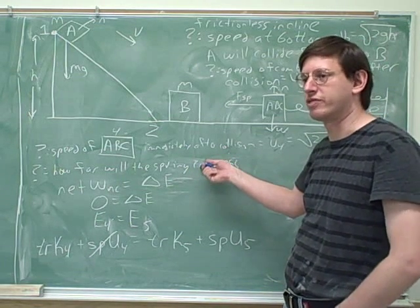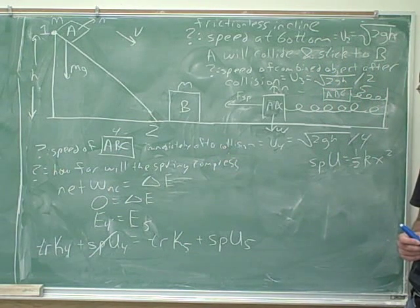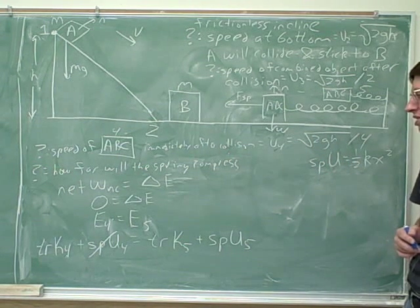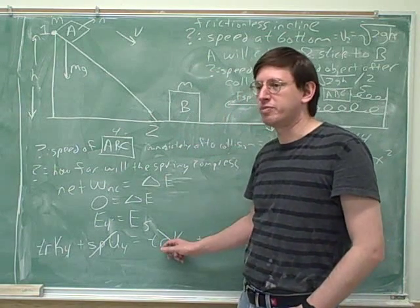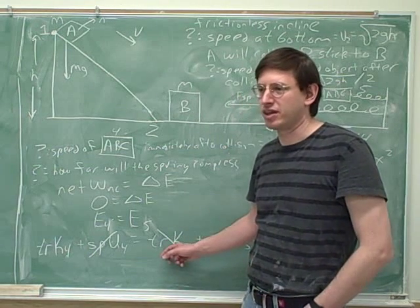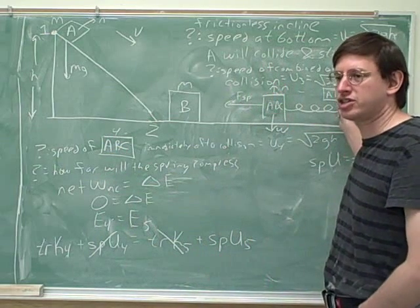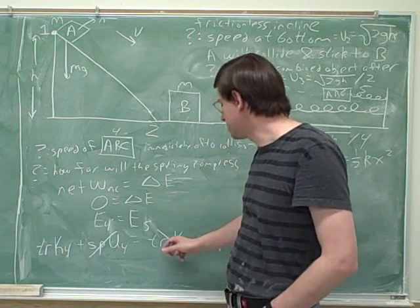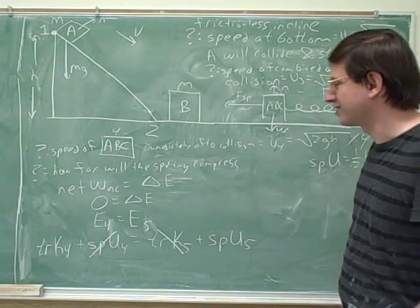When something changes direction, its speed is zero. So at the maximum compression, the kinetic energy in situation five will be zero. A little later it will gain kinetic energy again as it starts moving to the left, but at the instant of maximum compression it's just changing direction — so its speed is zero and kinetic energy five equals zero.